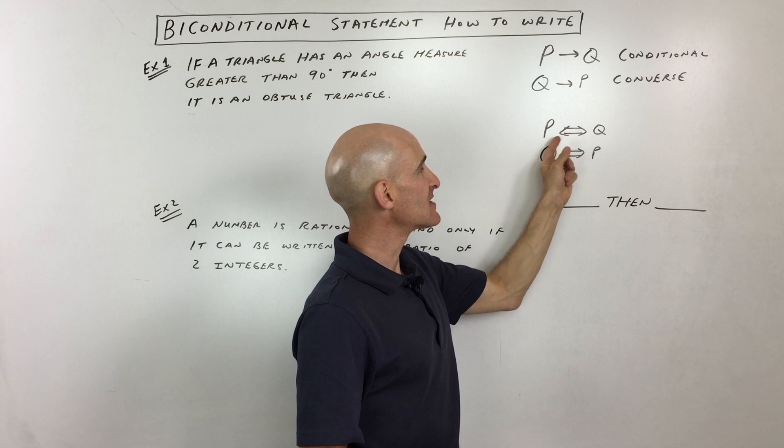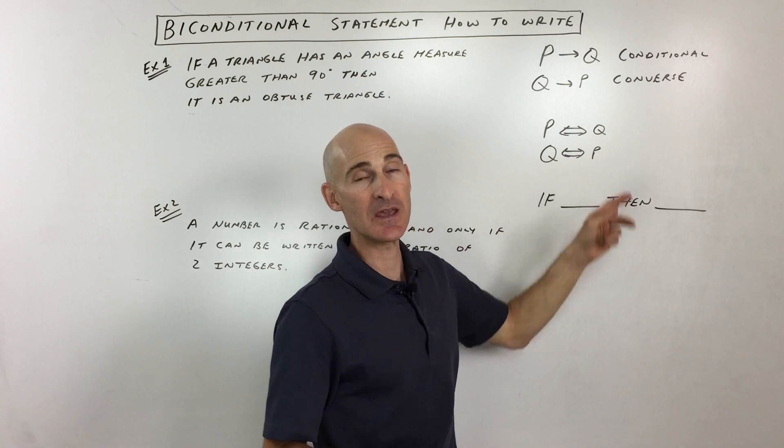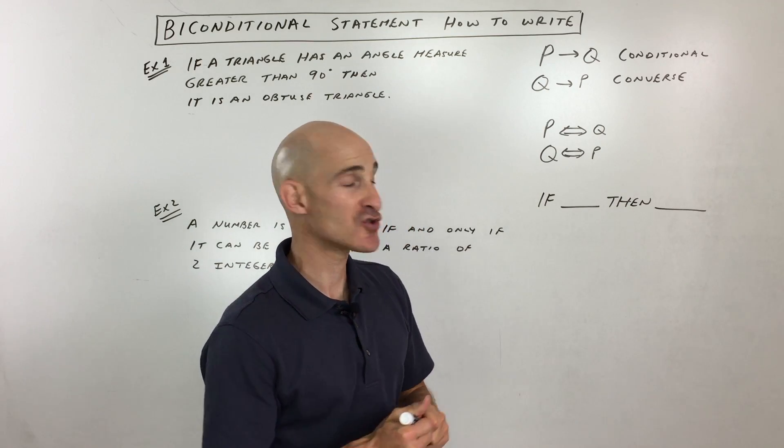We can symbolize this with a double arrow. So if P, if and only if Q, or Q, if and only if P. And that's how you want to write your biconditional statement.